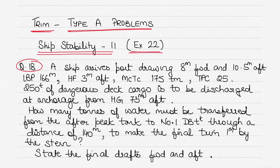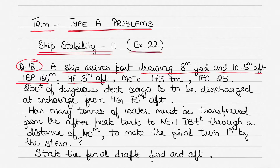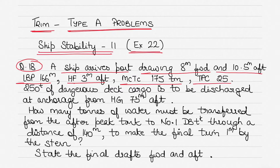Let's get started with the question. A ship arrives at port drawing 8 meters forward and 10.5 meters aft. The length between perpendiculars is 166 meters. HF is 3 meters aft. HF is the longitudinal distance between the center of flotation and the midship of the vessel. The midship is denoted by H and the center of flotation, about which the ship pivots, is denoted by F. The MCTC, or moment to change trim by 1 centimeter, is 175 ton-meters, and TPC (tons per centimeter immersion) is 25.